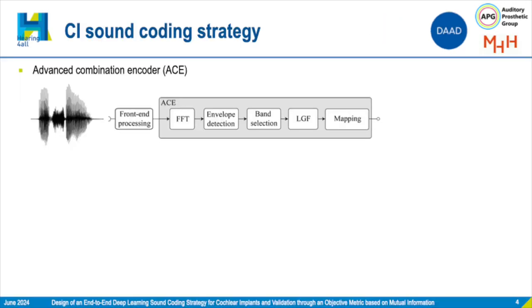There are several different sound-coding strategies out there in the market, but here we will focus on the Advanced Combination Encoder, or ACE for short, which is shown here in the block diagram.